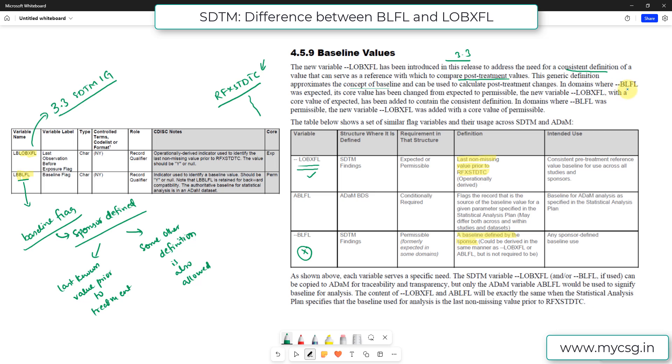In domains where BLFL was expected, its core has been changed from expected to permissible. As we have a new variable LOBXFL, there were some changes to the core designation of BLFL. So it is mentioned that in domains where BLFL was expected, BLFL has now been made permissible and the new variable LOBXFL with a core value of expected.